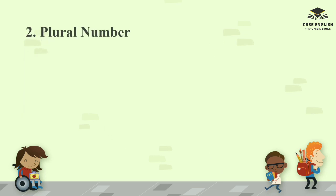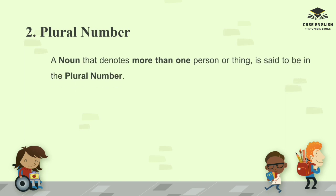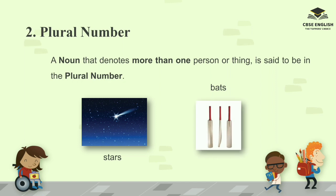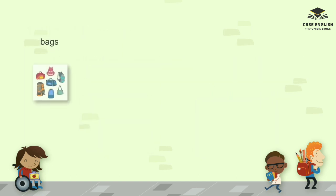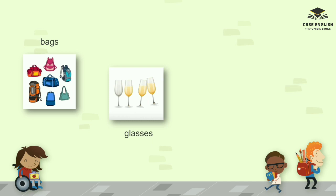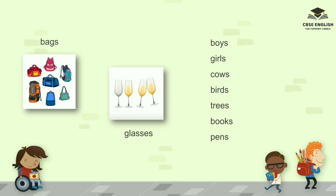Plural number. A noun that denotes more than one person or thing is said to be in the plural number. For example: stars, bats, bags, glasses, boys, girls, cows, birds, trees, books, pens, dolls.